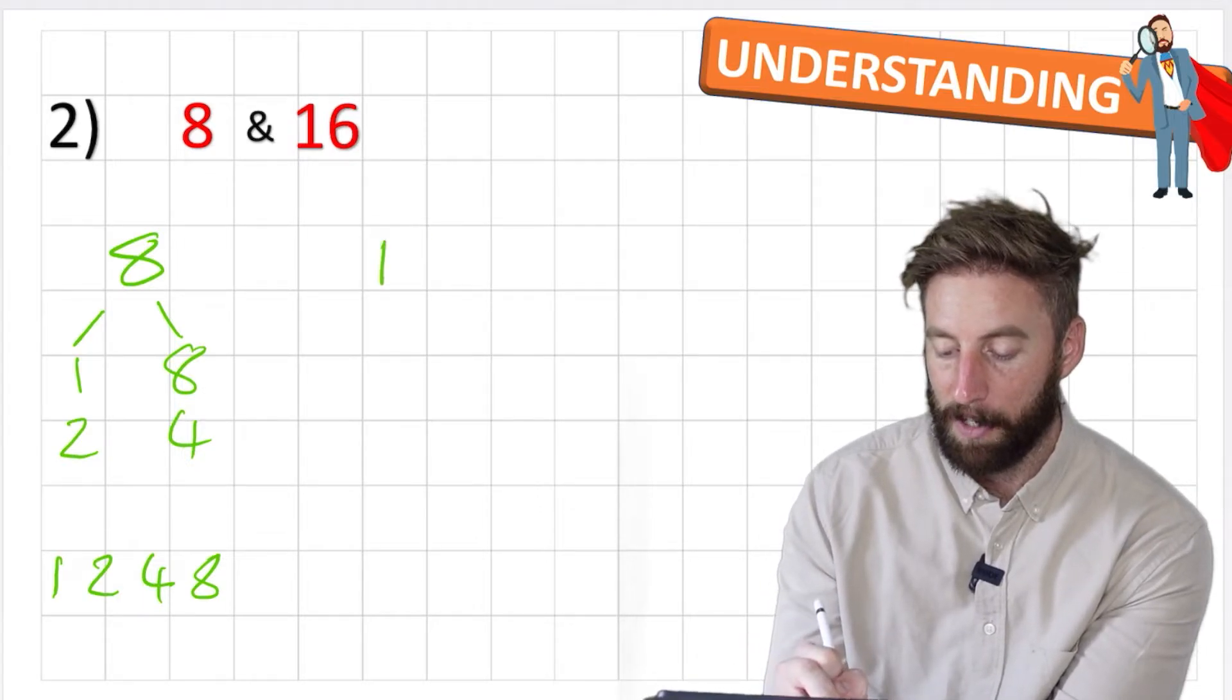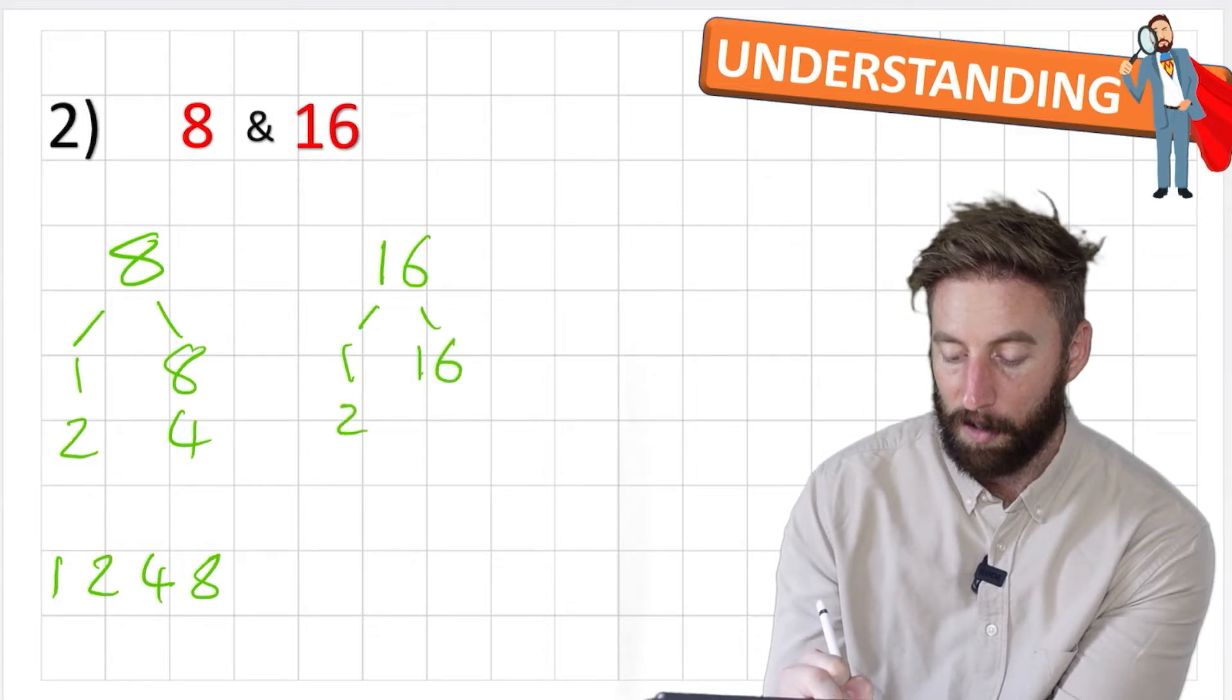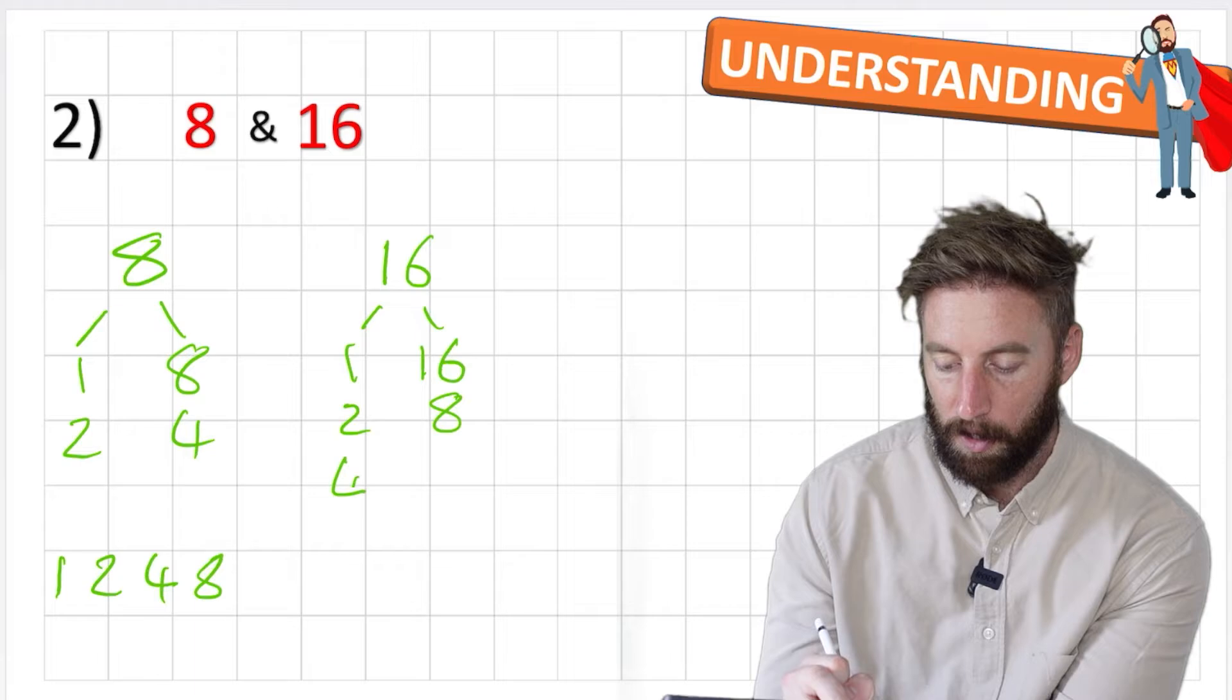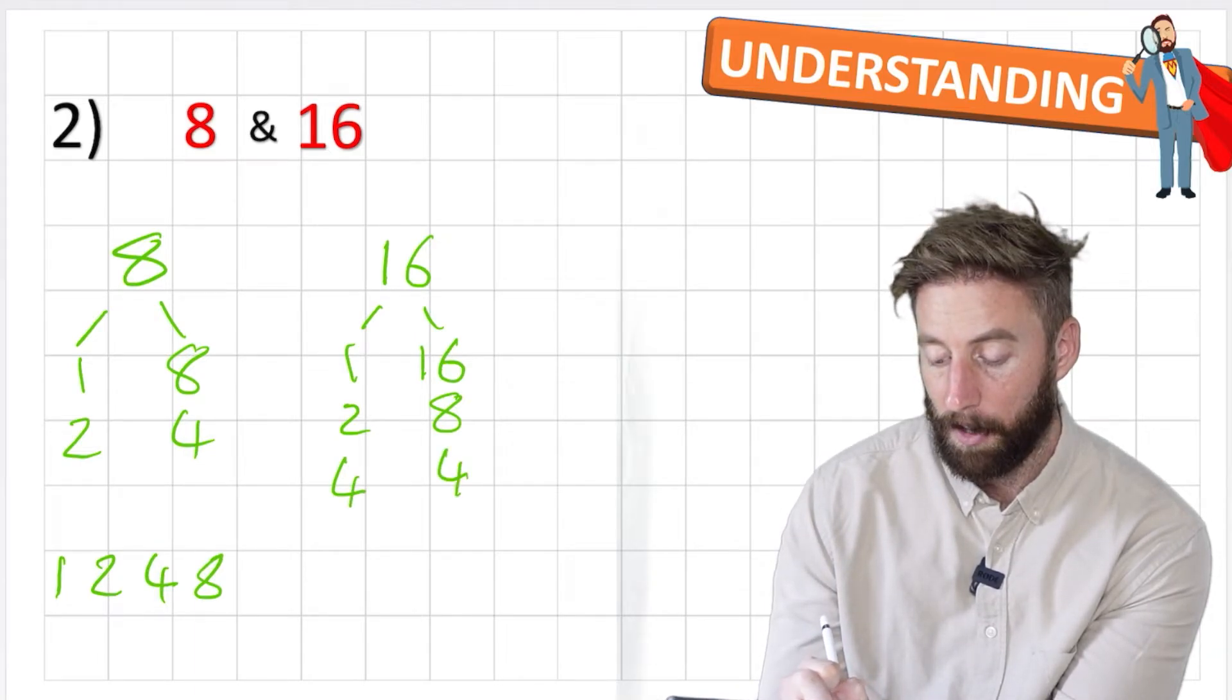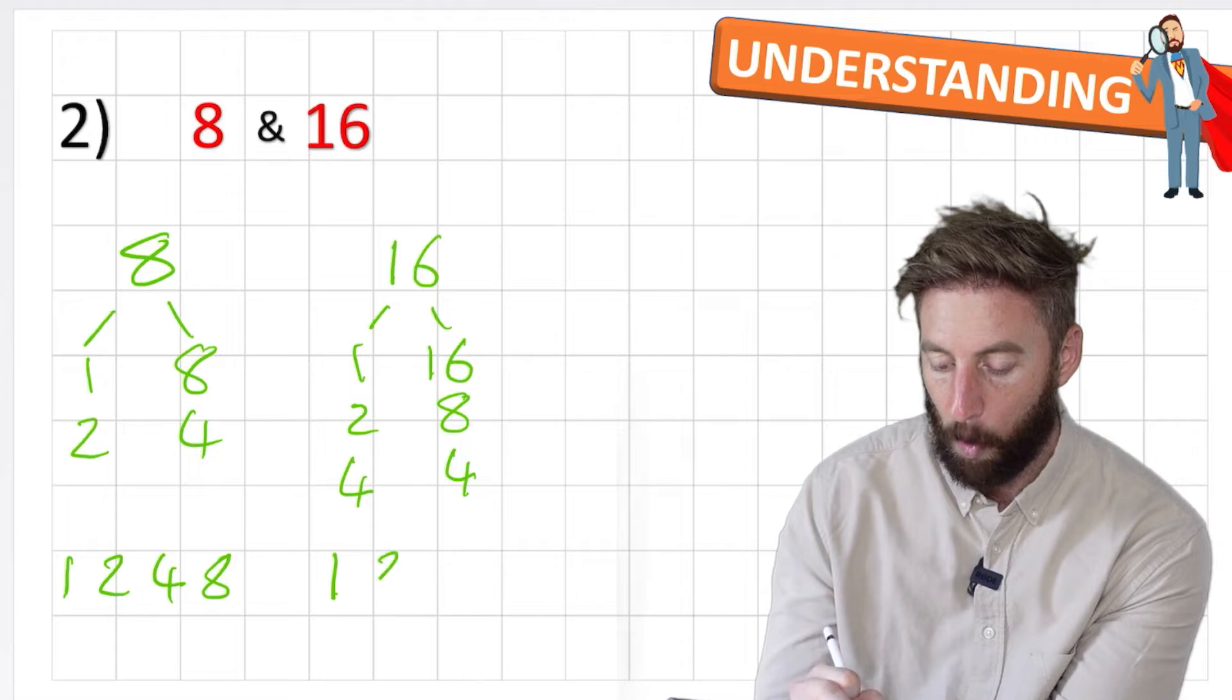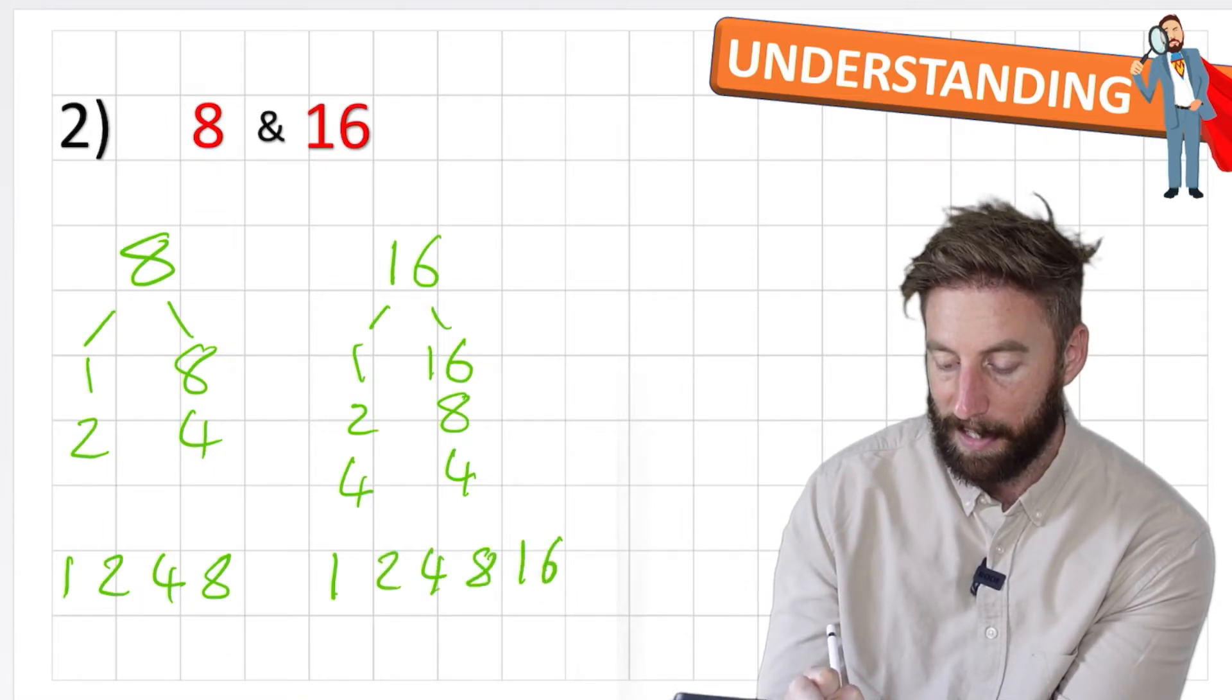Awesome. Now let's look at my factors of sixteen. I have one and sixteen, two and eight. Three. Is sixteen divisible by three? Three, six, nine, twelve, fifteen. Nope, doesn't look like it. So four and then what do we multiply four by? Another four. So therefore I know that I've come to the end because I've already now used that other four. So my factors of sixteen are one, two, four, eight and sixteen.